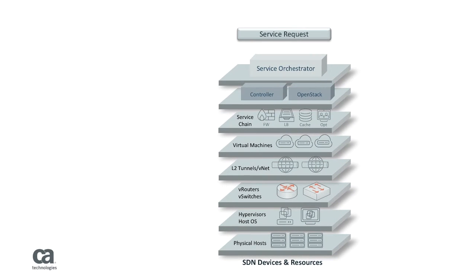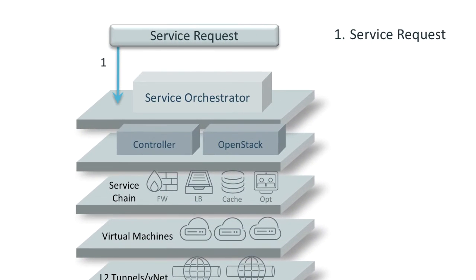So how does CA help peel back this onion and get through all this complexity that tomorrow's SDN and NFV networks bring? Well, let's start at the top. In step one, an initial service request will come into the SDN orchestrator. In our example, let's say it's to provision a new firewall-based policy.